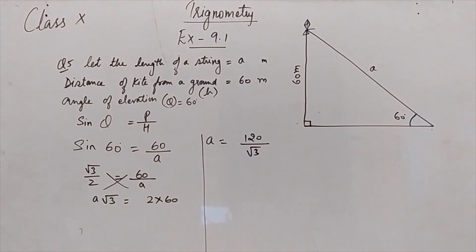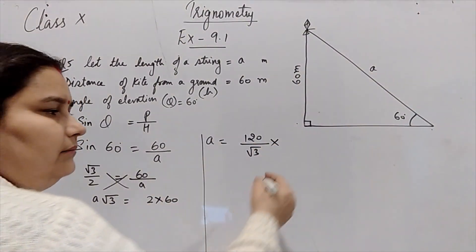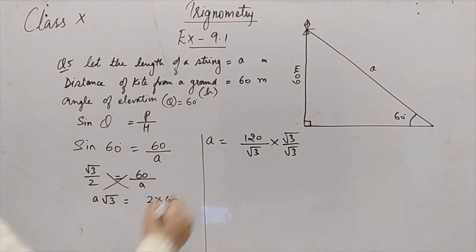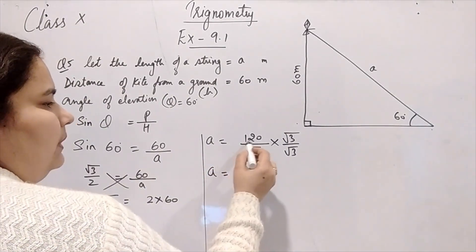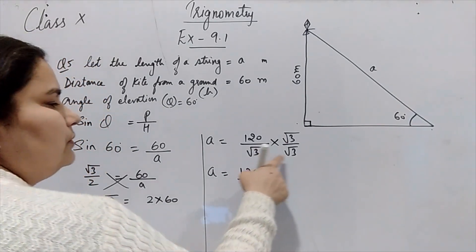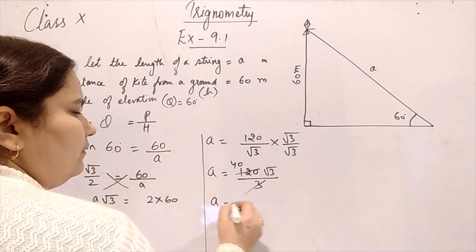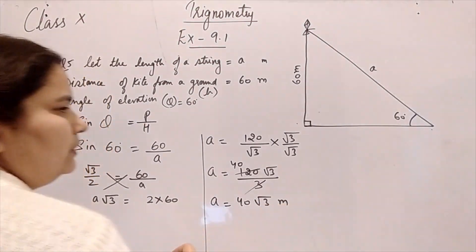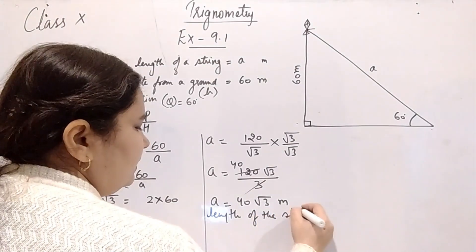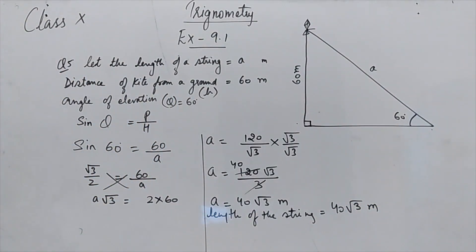Now √3 is in the denominator, so we rationalize by multiplying by √3/√3. So a = 120√3 upon √3 × √3 = 120√3 upon 3. Cancelling, a equals 40√3 meters. So the length of the string is 40√3 meters.